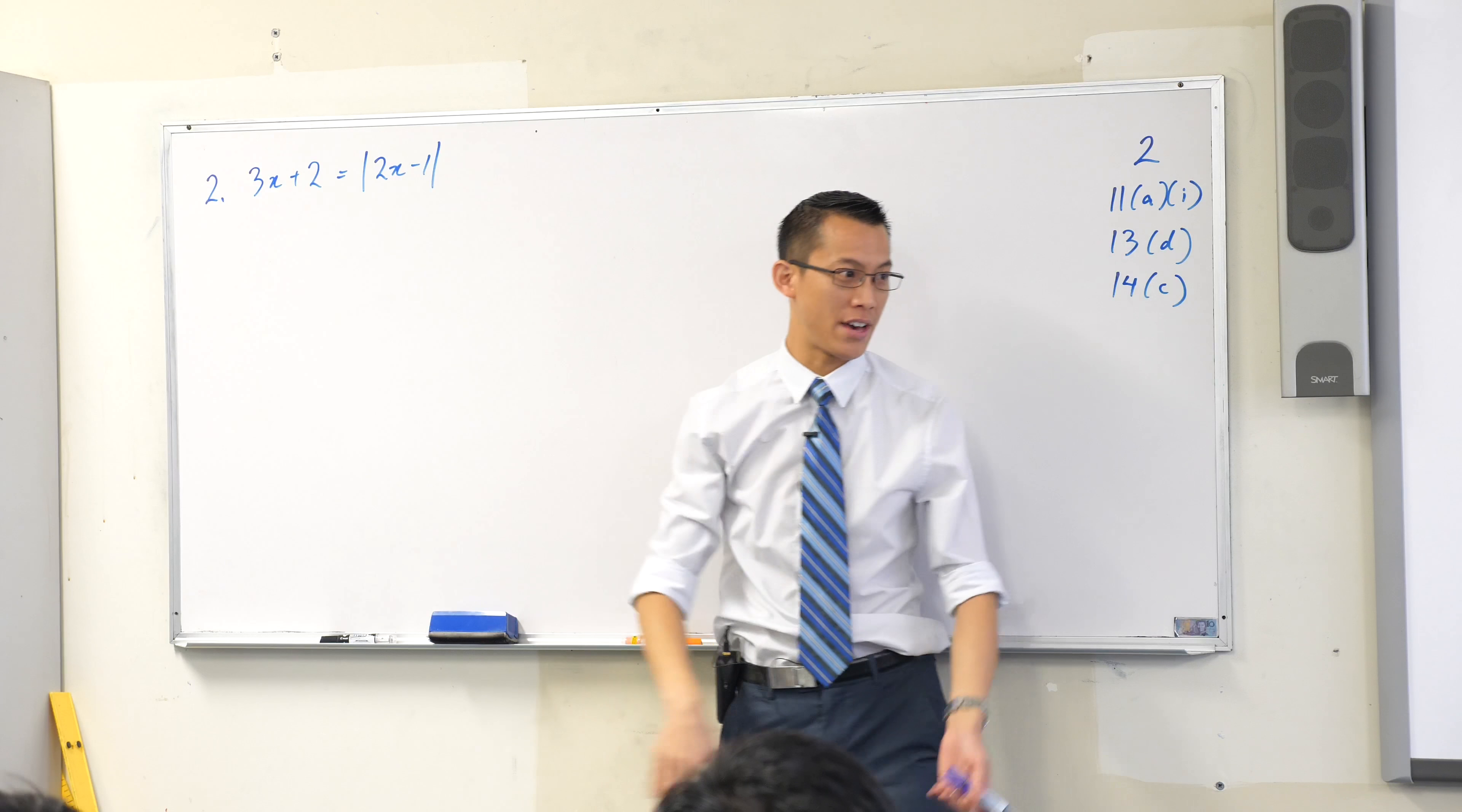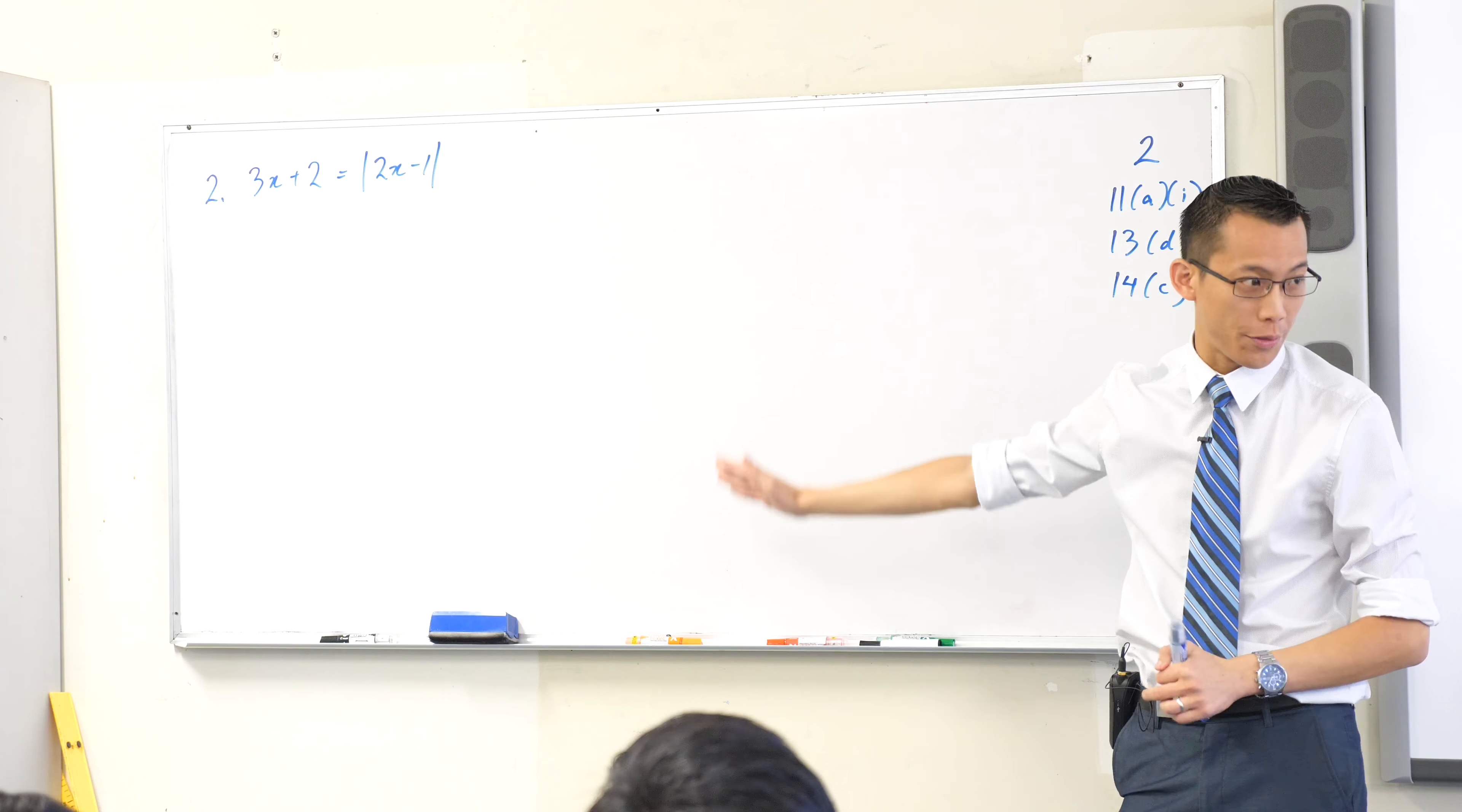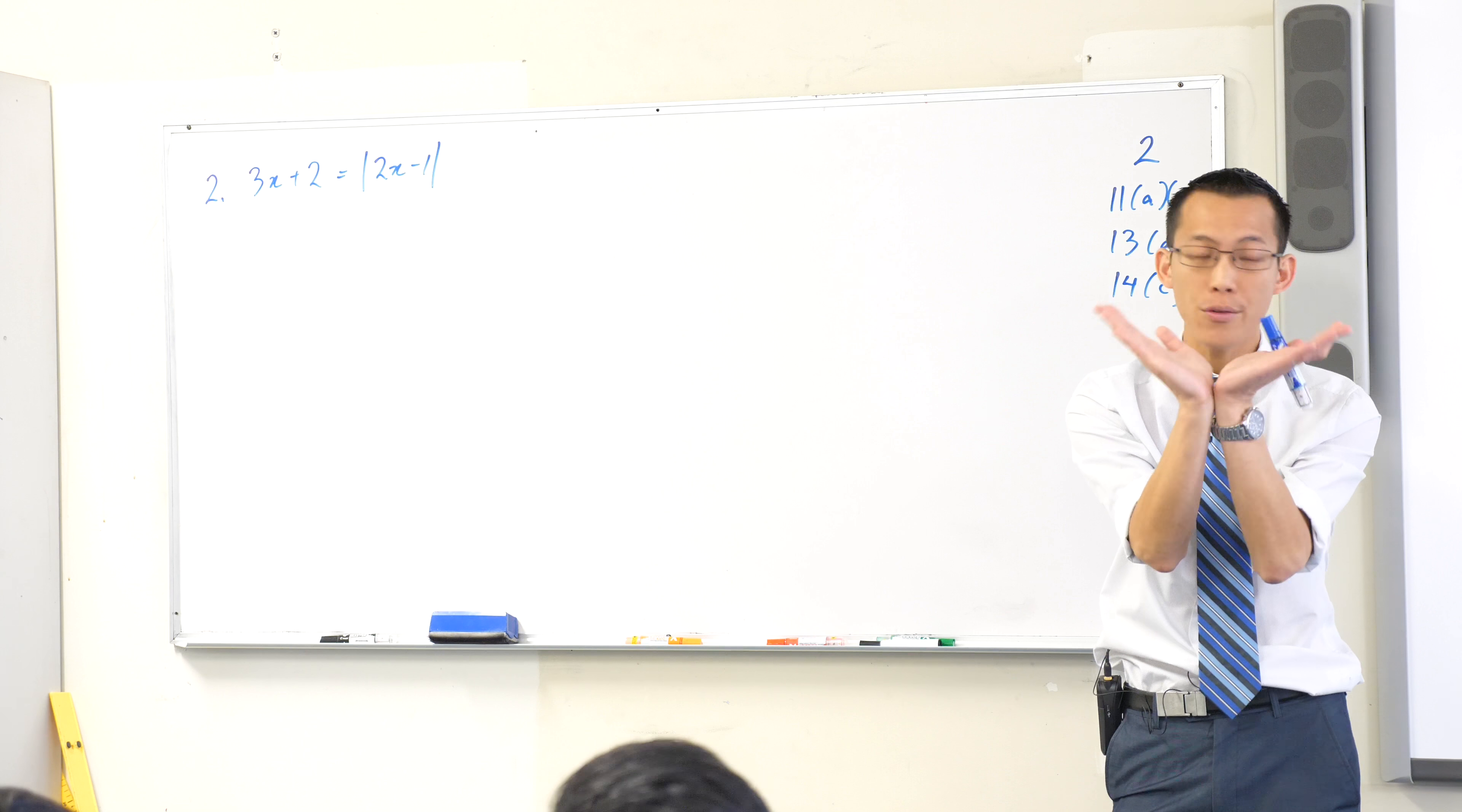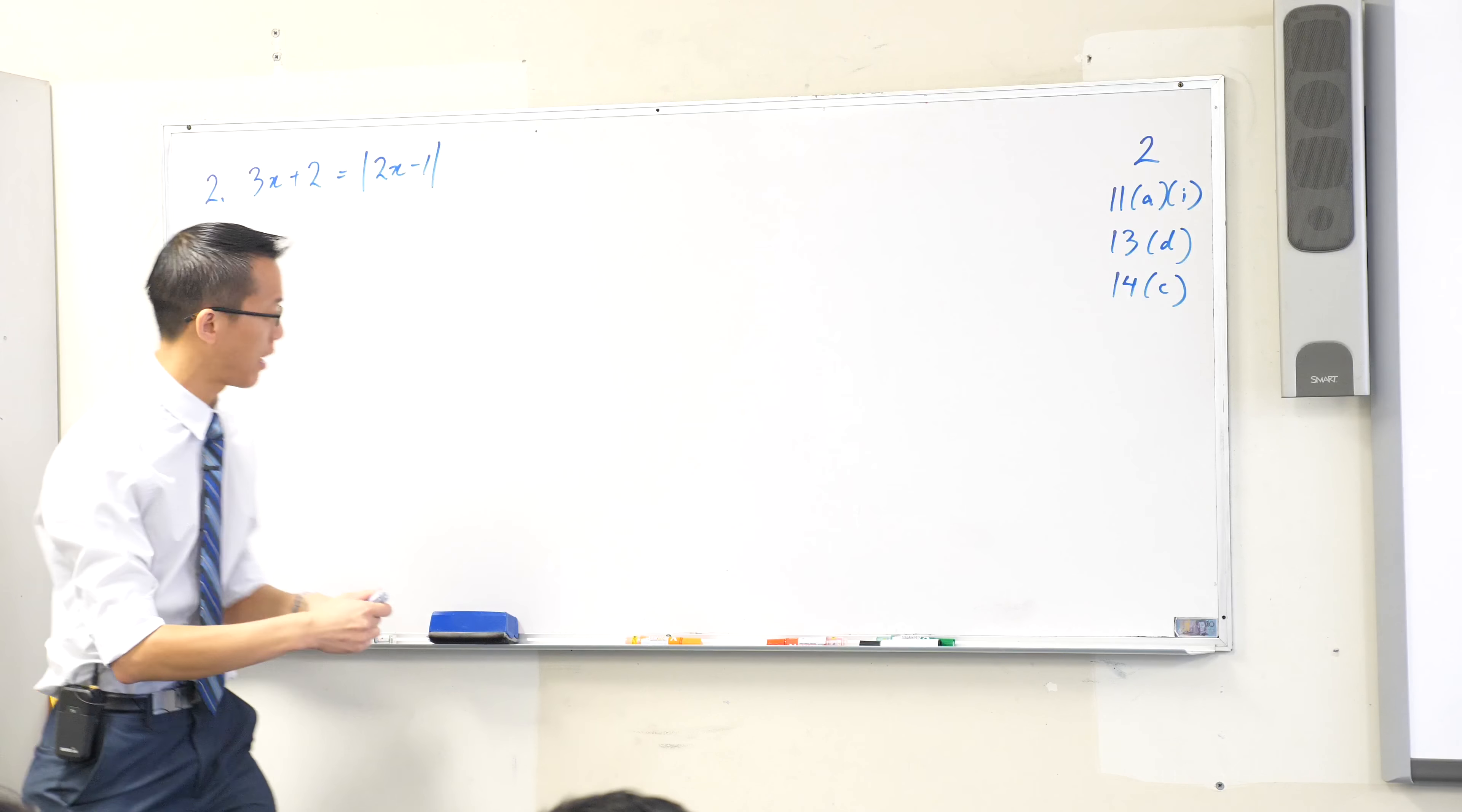You've got an equation over here, it's an absolute value, so it's gonna be one of those weird bouncy curves, right? When you're being asked to solve this, you're being asked to find where is it that these two intersect. That's all an equation like this means.